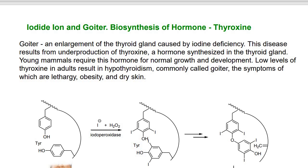Goiter is an enlargement of the thyroid gland caused by iodine deficiency. This disease results from underproduction of thyroxine, a hormone synthesized in the thyroid gland. Young mammals require this hormone for normal growth and development.